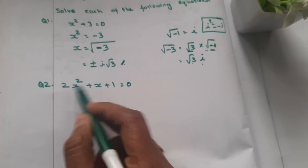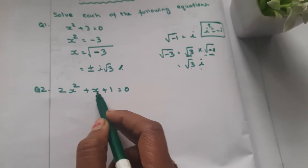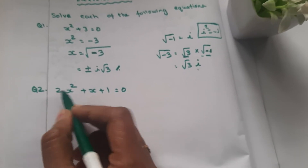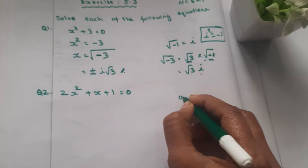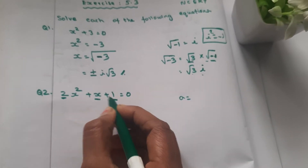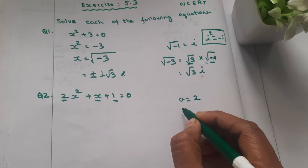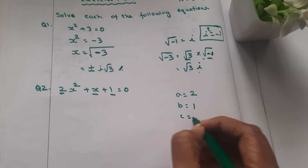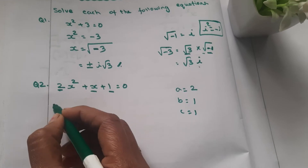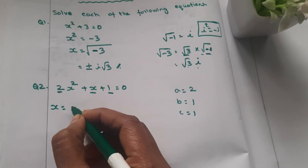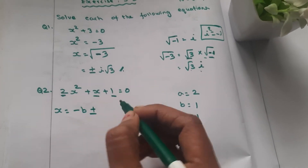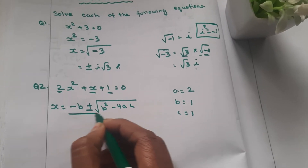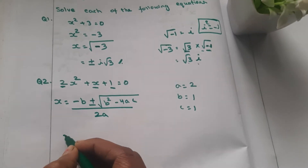Now the second equation is 2x squared plus x plus 1 is equal to 0. Let us solve the equation. We identify the values: a is equal to 2, b is equal to 1, c is equal to 1. We apply the quadratic formula: x is equal to minus b plus or minus root of b squared minus 4ac divided by 2a.